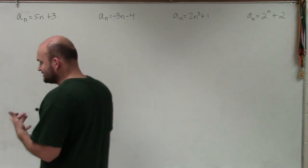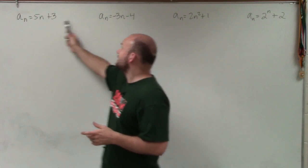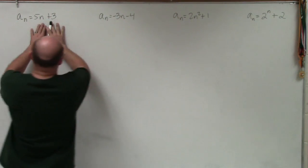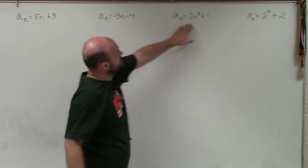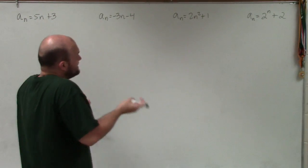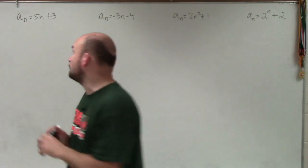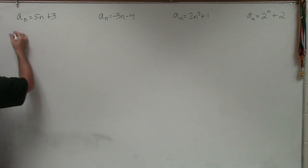Now remember to understand when we have sequences, each of these is the 5n plus 3, the negative 3n minus 4, the 2n squared plus 1, and the 2 raised to the n plus 2. Those are all our rules, where n is going to be the value. The n is going to be the number in the sequence. So if we want to find the first number in the sequence, basically what I'm going to do is I'm going to plug in a sub 1.